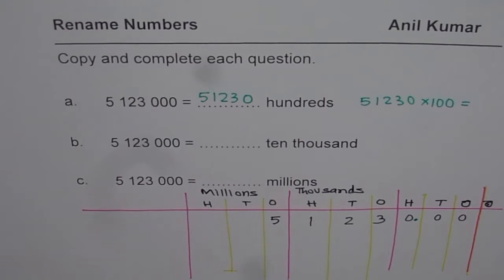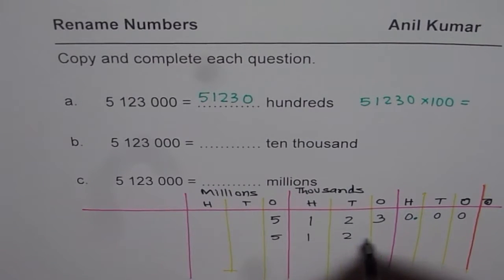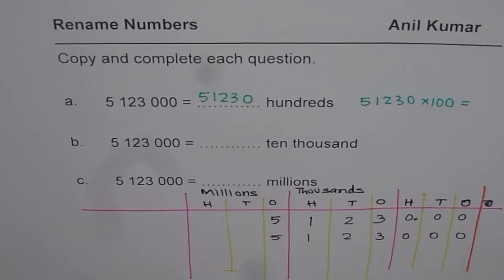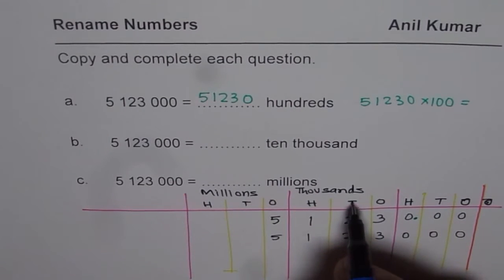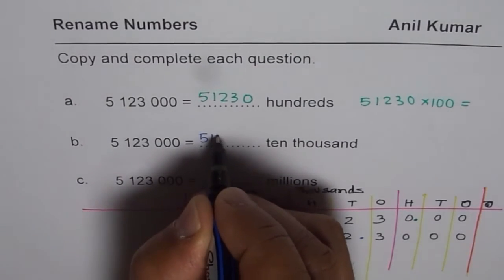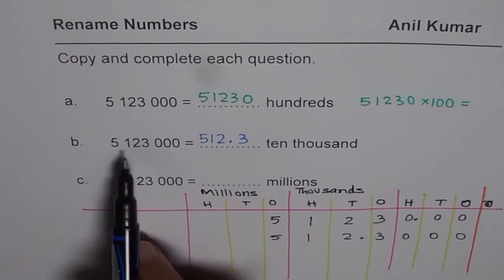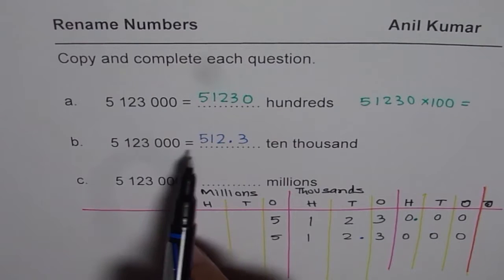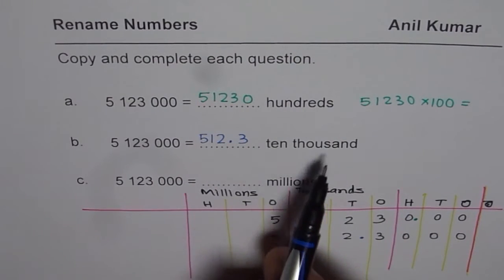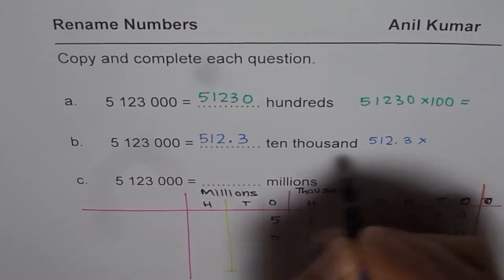Now I'd like you to do parts B and C — pause the video, answer the question, then look at my solution. Let me rewrite the number to write it as ten thousands. The number is 5,123,000. We need to write it as ten thousands, so I'll put a decimal after the ten thousands place and we get 512.3 ten thousands. So five million one hundred twenty-three thousand is the same as 512.3 ten thousands. You can check using a calculator — multiply 512.3 by ten thousand and verify.